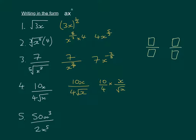And x over root x is x to the power of 1 over x to the power of 1 half. So that's going to be 10 over 4 times x to the 1 over x to the half. And 1 minus 1 half is 1 half, so we'll have 10 over 4 x to the power of 1 half.